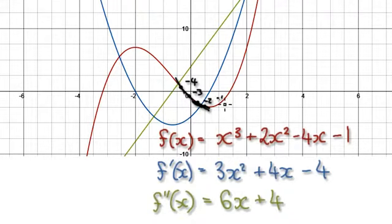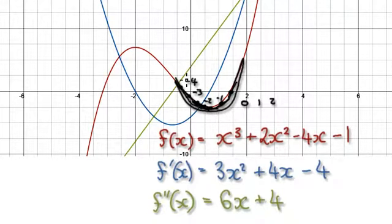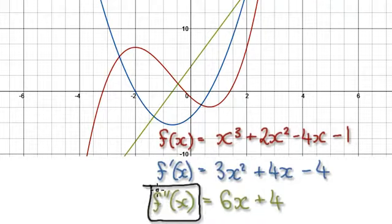Here we can say that the gradient is negative 1, increasing from minus 4 to minus 1. Then right here the gradient is 0, and then here it's a gradient of 1, then 2. You can see that by the gradient increasing, the original function really concaves up. You can use the same argument with f double prime being less than 0.